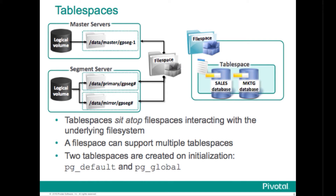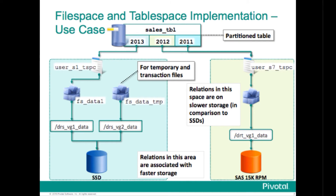A table space interacts with the underlying file system by being associated with a specific file space, and a file space can host multiple table spaces. Table spaces allow database administrators to segregate data and take advantage of the storage profiles of different hardware. Within Greenplum, you can assign database objects such as databases, tables, and indexes to a specific table space. Two table spaces are defined by default: PG underscore default for system databases and user objects, and PG underscore store global for the shared system catalog. Greenplum relies on you creating the file system and associating a file space with it.